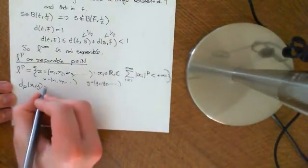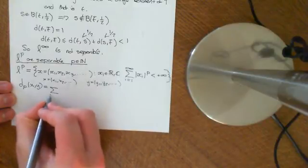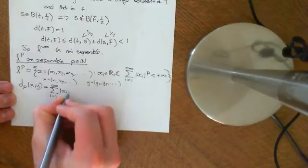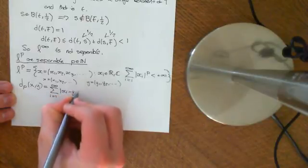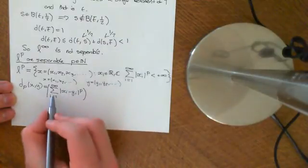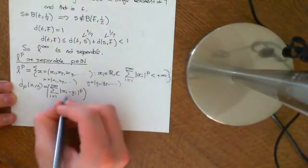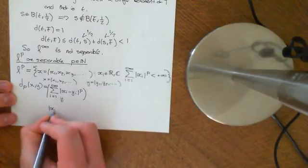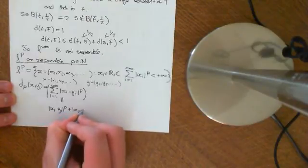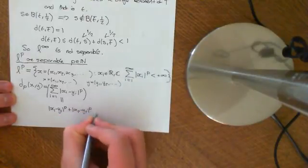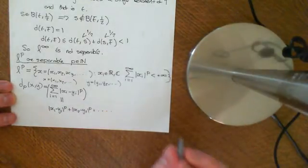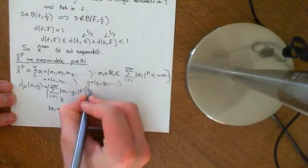And the distance between them is going to be given by the sum from I is equal to 1 to infinity of the modulus of XI minus YI to the power of P. And then you take all that entire sum. You do that infinite series. So let me just write out what it is. It's X1 minus Y1 to the power of P. You then add on X2 minus Y2 to the power of P. You continue on forever. You take the limit of that process and you get some number. Take that number and do it to the power of 1 over P.